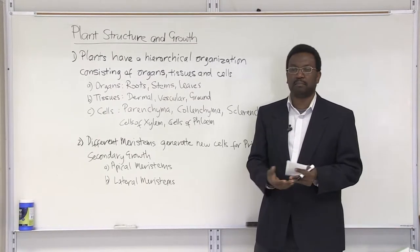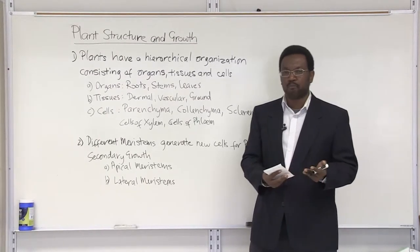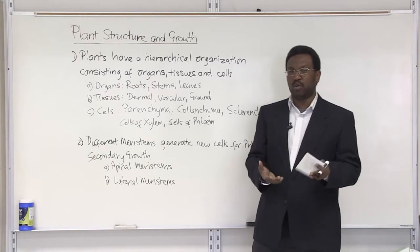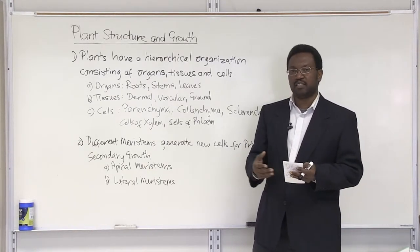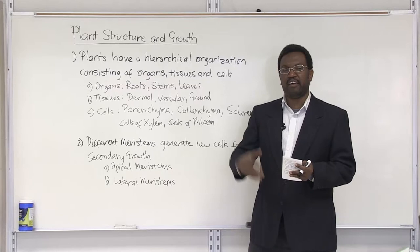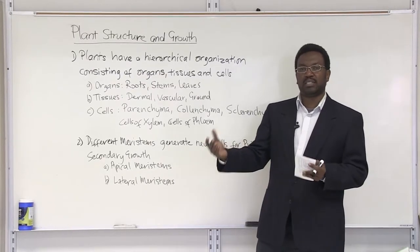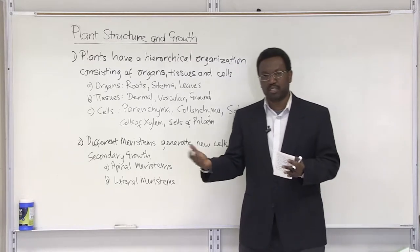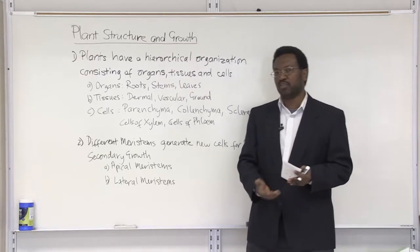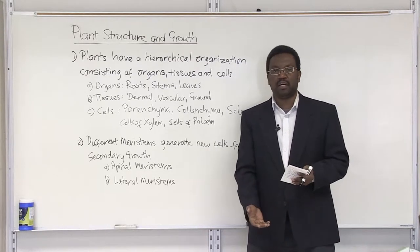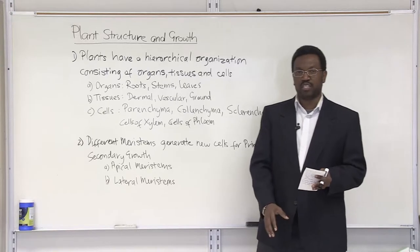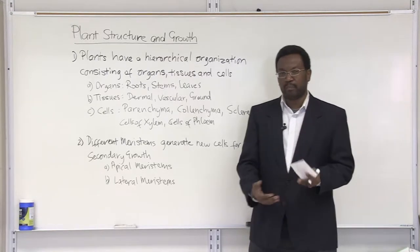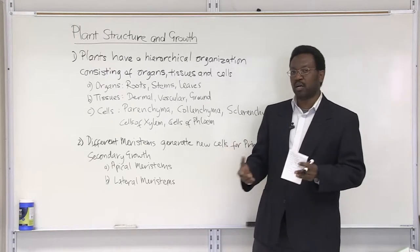A lot of us maybe don't pay attention to plants, but without them we cannot survive. In terms of the organization, plants from the aerial parts are utilizing light and carbon dioxide as nutrients they need for photosynthesis, and in terms of the underground parts, the root system, they're utilizing water and minerals from the soil.